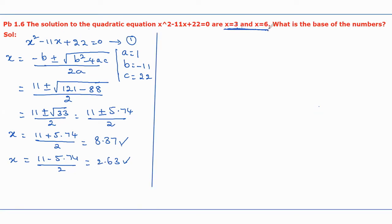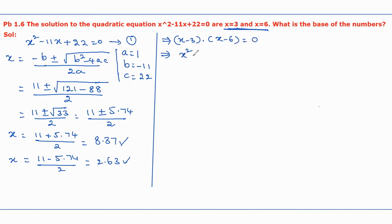Now let us assume the given solution values 3 and 6 are in the decimal number system and find the equivalent quadratic equation by taking them as factors: x minus 3 multiplied by x minus 6 equal to 0. Expanding these two terms gives x squared minus 9x plus 18 equal to 0. This is equation number 2.